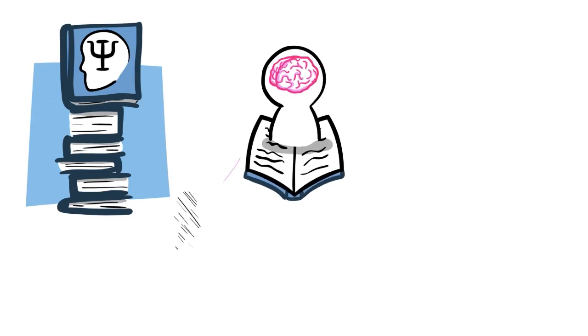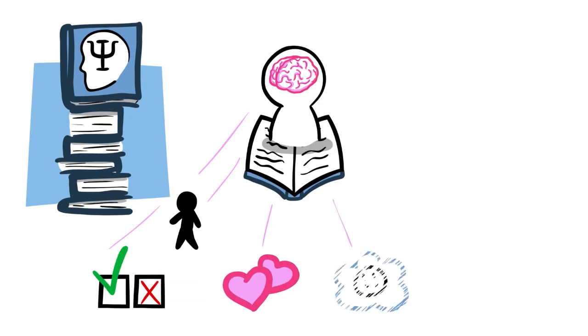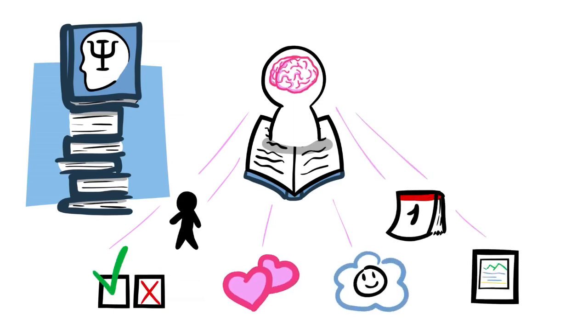Our brain controls our actions, everything from making decisions, to feeling love, to daydreaming, to creating habits, and even remembering.